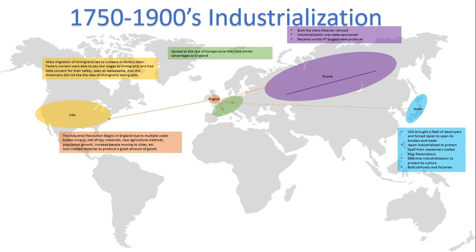Next we go to Japan. Japan actually selectively adopted western industrialization — they understood that countries that modernized and industrialized were becoming the world's major powers, and to protect itself and its rich culture it must take on some of these properties. This was partly forced when the USA brought a fleet of warships to Japan's borders and pressured Japan to open its borders and trade. Japan industrialized to protect itself from westerners, and this industrialization was called the Meiji Restoration. They made multiple reforms, built railroads and factories, and actually became a world power.